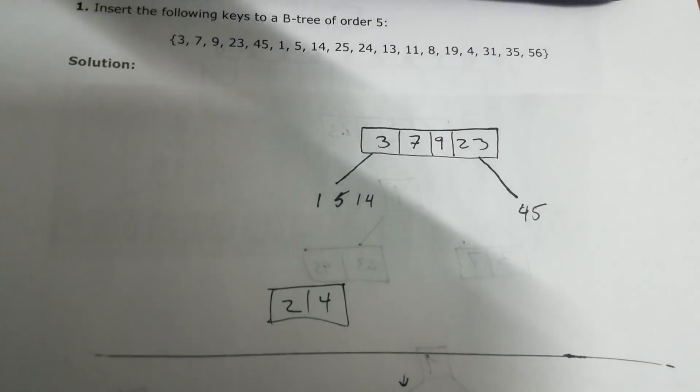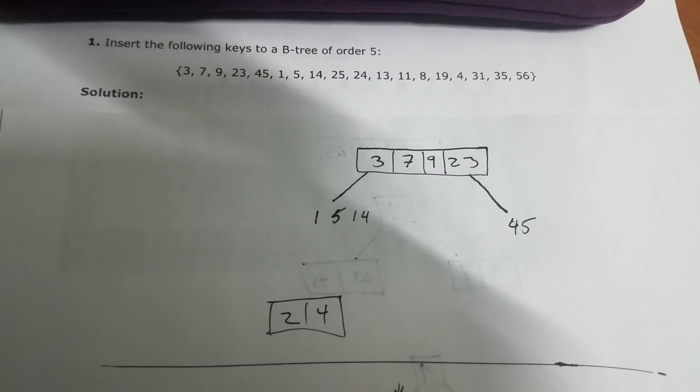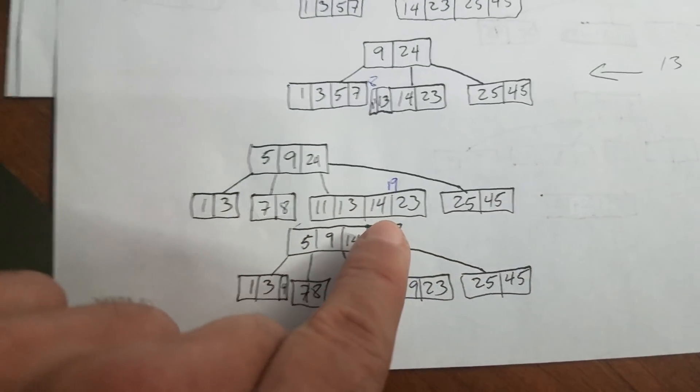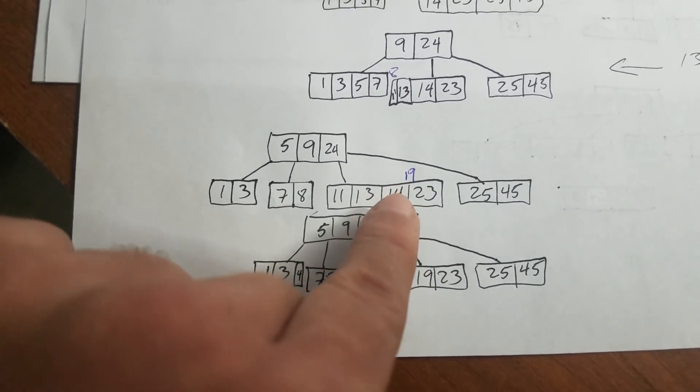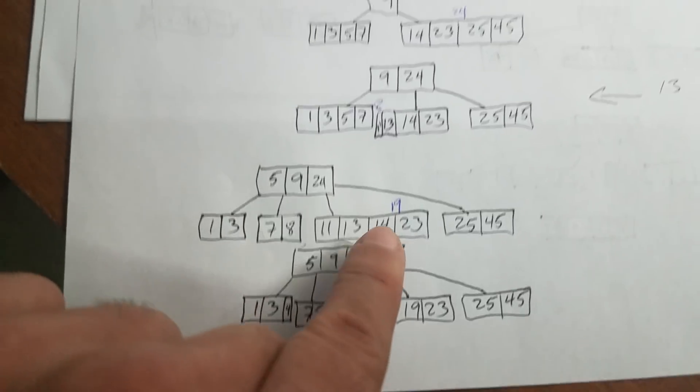Now, the next one is going to be 19. So 11, 13, 19. 19 is going to be here and it's going to create a violation. So we have to split again.